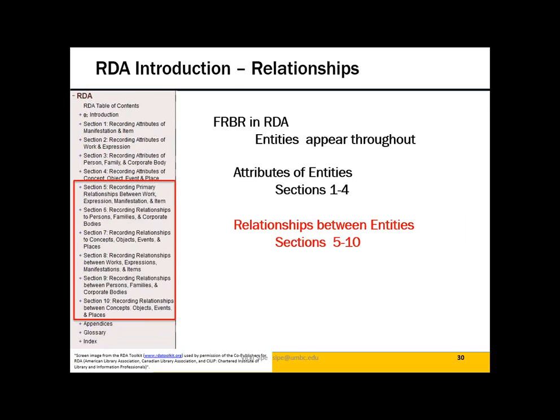Relationships, which are central to RDA, fill Sections Five through Ten. These are the three parts of the FRBR data model: entities, relationships between entities, and the attributes of both. That brings us to the FRBR model in RDA.